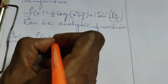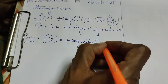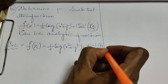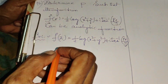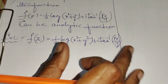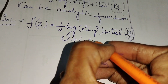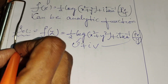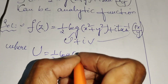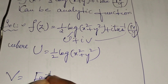The given problem is: (1/2)log(x² + y²) + i·tan⁻¹(Px/y). Comparing with u + iv, we get u = (1/2)log(x² + y²) and v = tan⁻¹(Px/y).